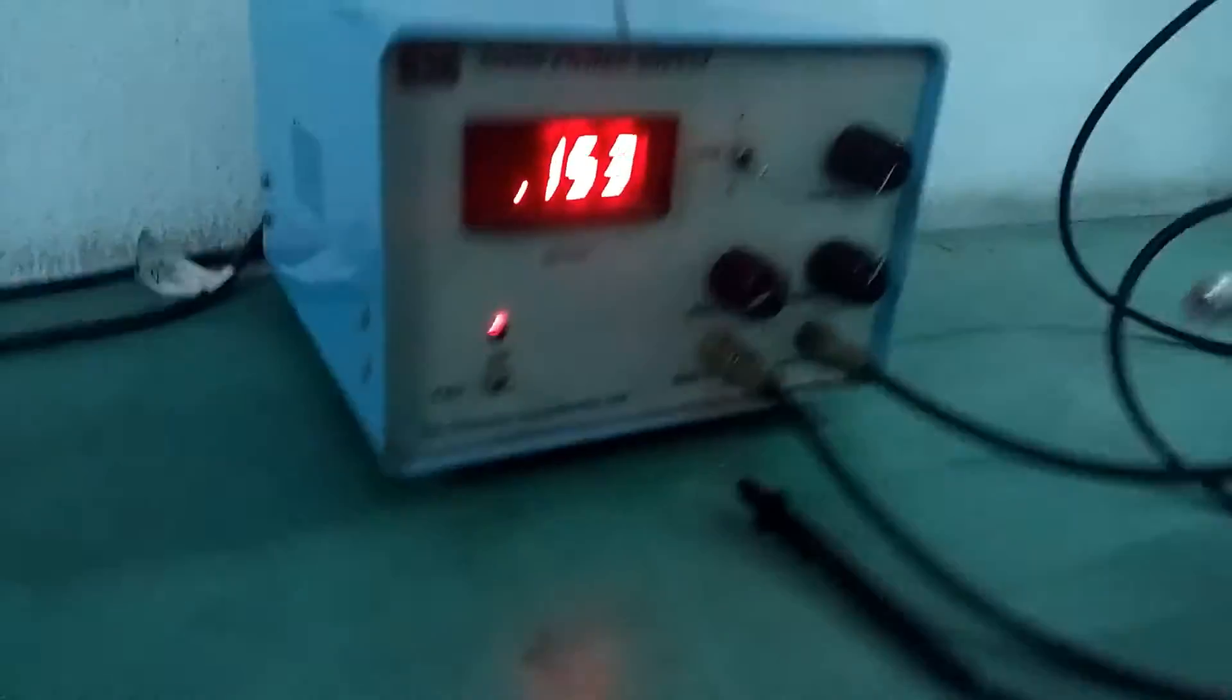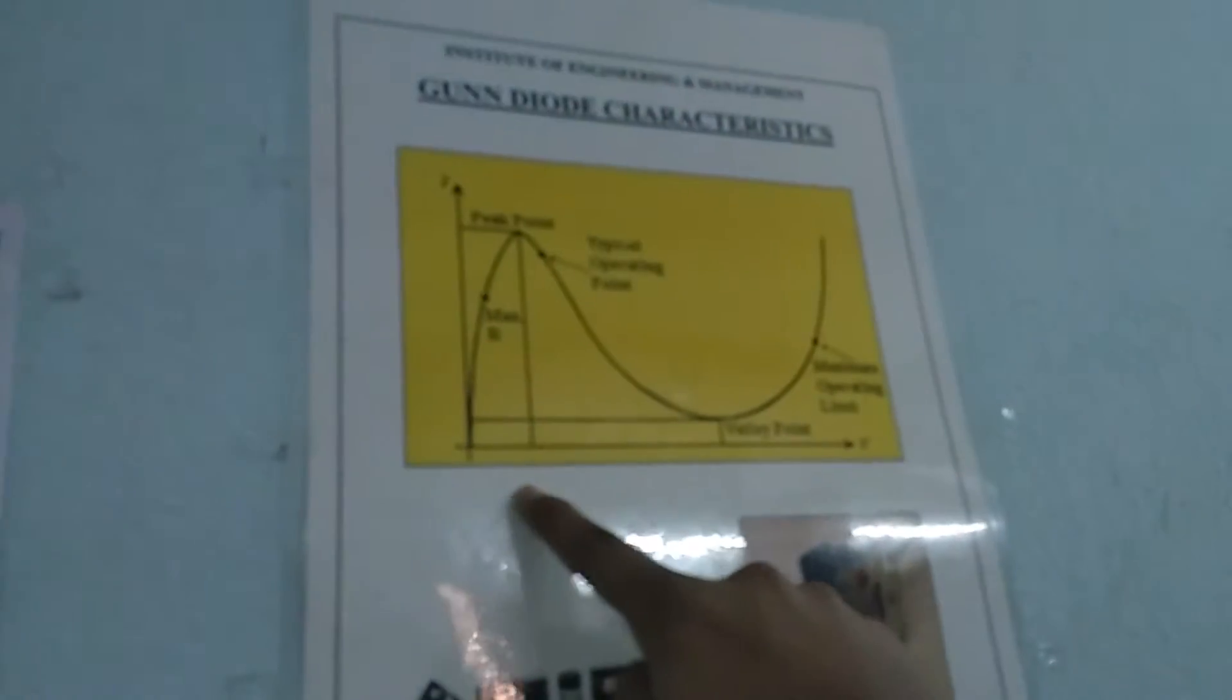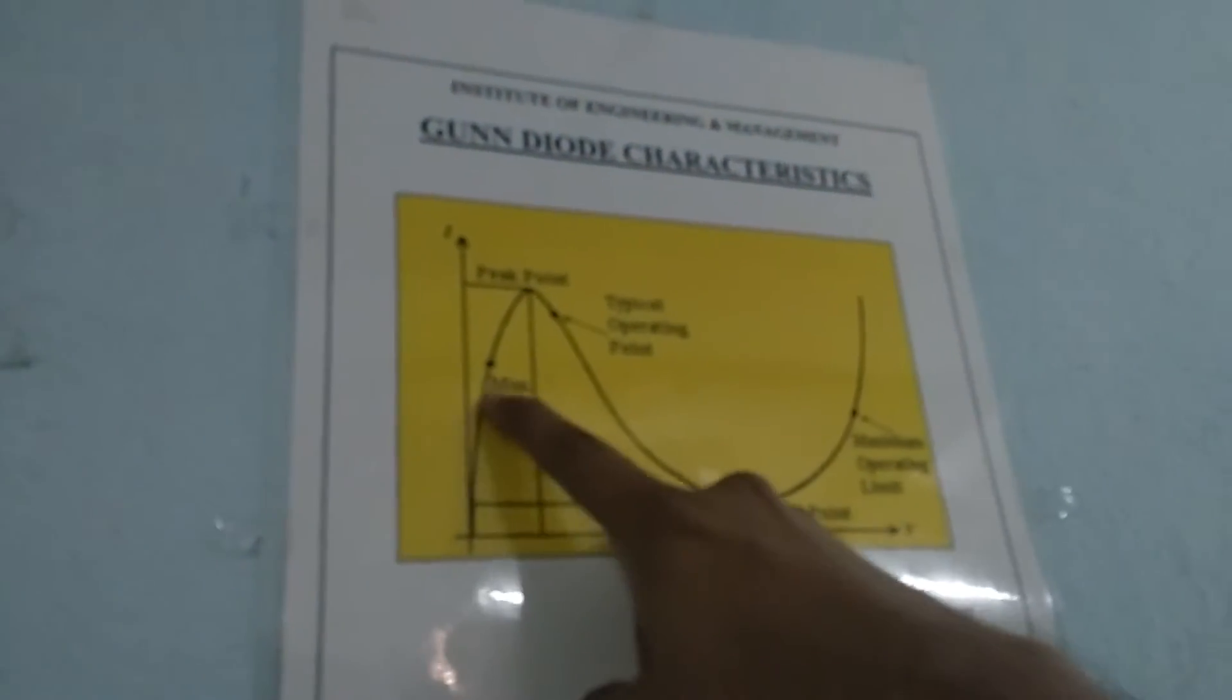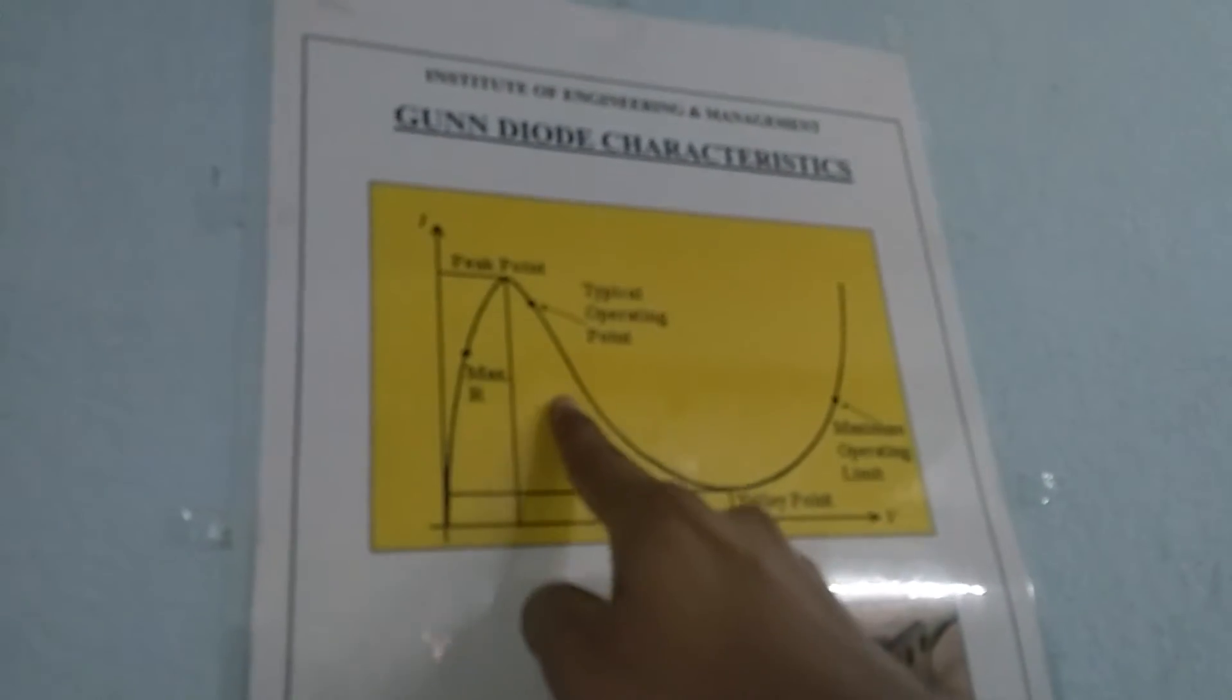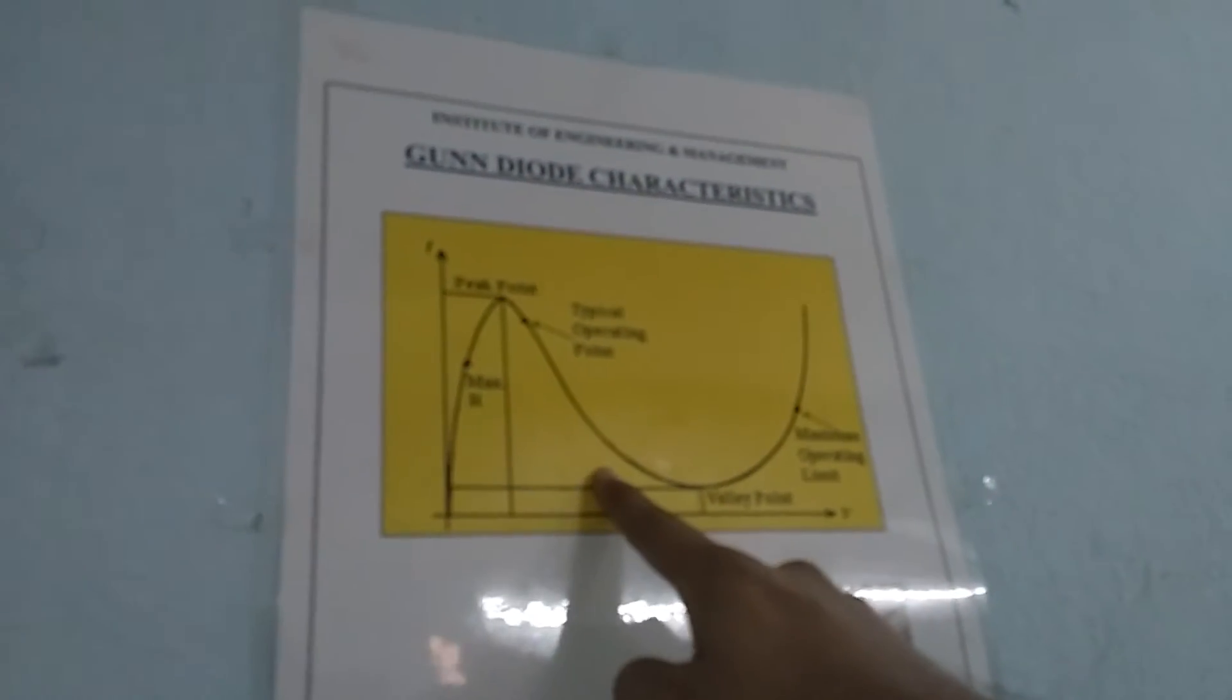As we can see, if we see the graph, as we will go on increasing the voltage, the current will gradually rise. Then it will reach a peak point. Then it will decrease which is the negative resistance region.